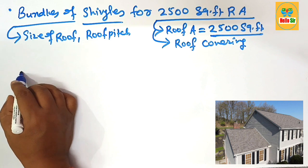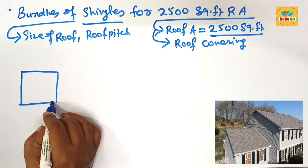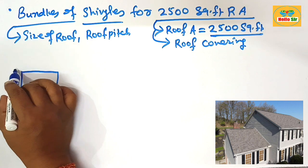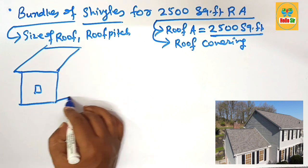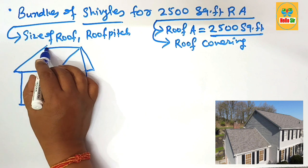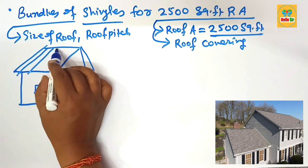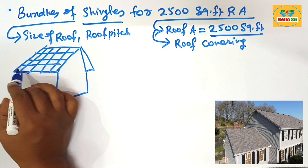First we make here rough diagram to understand about the dimension for the roof structure. This is rough diagram to understand about the dimension for the roof structure. This is roof structure covered with shingles in different pattern.